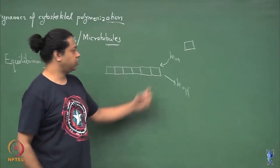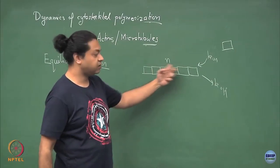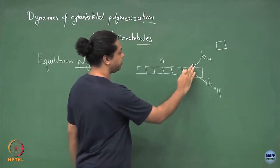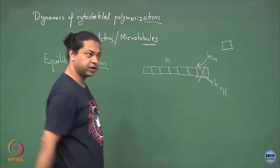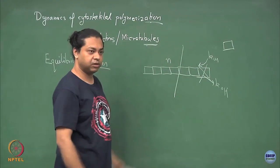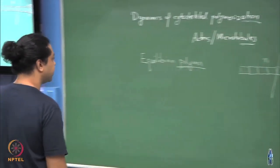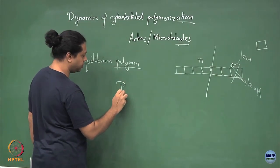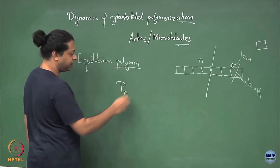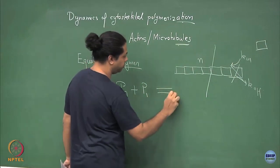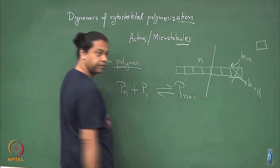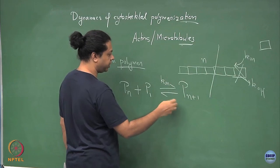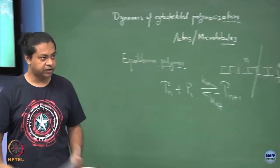So if we have a polymer of length n, it can only grow by the addition of one more subunit, or shrink by one subunit dissociating. There is nothing like a breakage from the middle where it snaps into two parts. So the relevant chemical reaction is: a polymer of length n adds a monomer and becomes a polymer of length n+1. It has an on rate to go this way and an off rate for the dissociation.